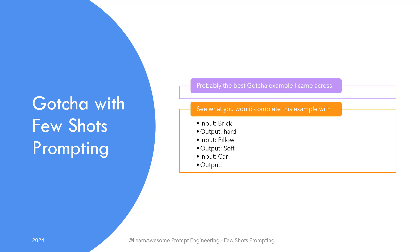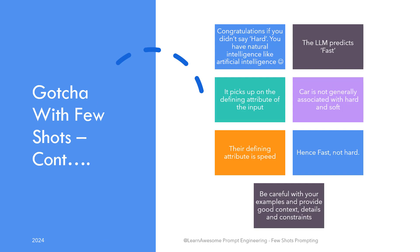We have seen examples where few-shot prompting worked brilliantly, but I also came across a very interesting example where few-shot prompting totally fails. Let's say: input brick, output hard; input pillow, output soft; input car, output — what do you expect? Be ready to be disappointed if you were expecting 'hard,' as it is going to say 'fast.' Why? Because it picked up on the defining attribute of the input. It would produce 'hard' or 'soft' if you instructed it to confine output to those two words. But examples can convey totally different meaning than the one you were thinking about. Car is not generally associated with hard or soft, while brick and pillow are. So it reasoned that we are trying to output the most defining aspect of the input, and hence it generated 'fast.' Examples need to have good context and detail, and prefixes and formatting you specify in examples need to be meaningful and give additional context to the model.